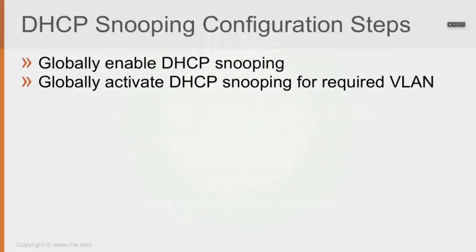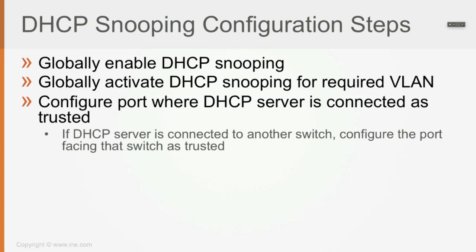From a configuration point of view, you first have to globally enable DHCP snooping, then activate it per required VLAN where your DHCP clients are. It doesn't make sense to enable DHCP snooping on a VLAN if you don't run DHCP in that VLAN. Then you have to configure the port where the DHCP server is connected as trusted, because by default all ports are DHCP untrusted, which means the switch inspects all DHCP packets on those untrusted ports.